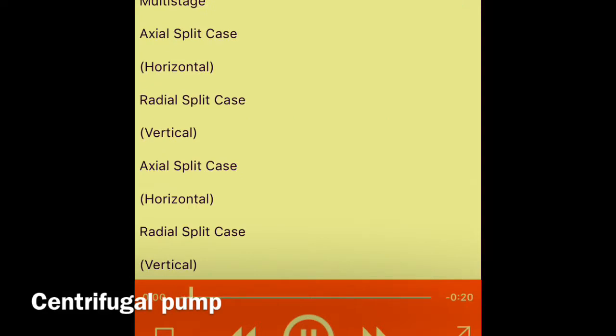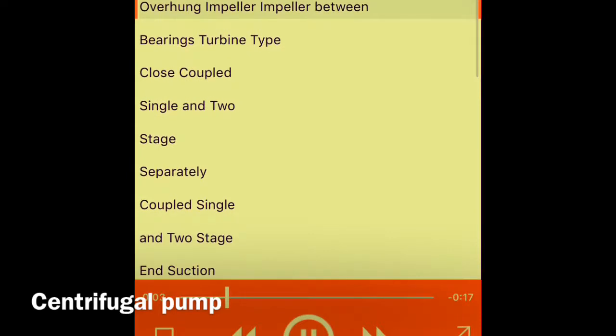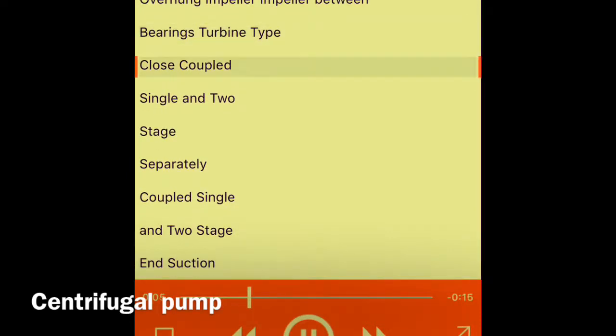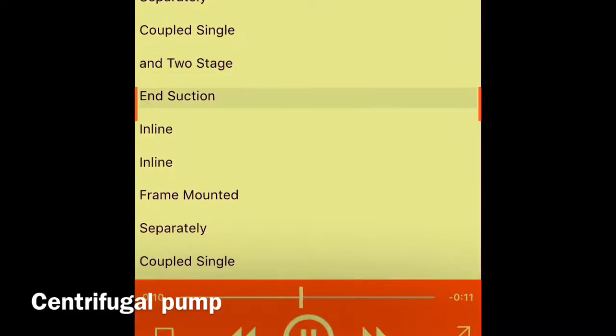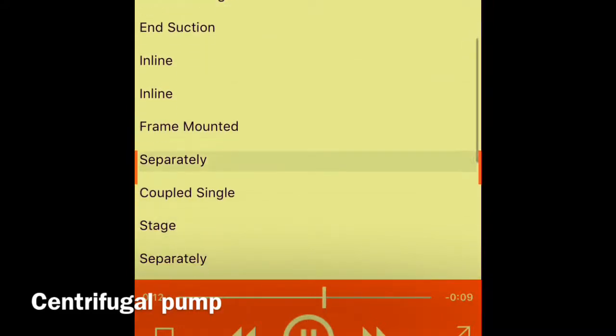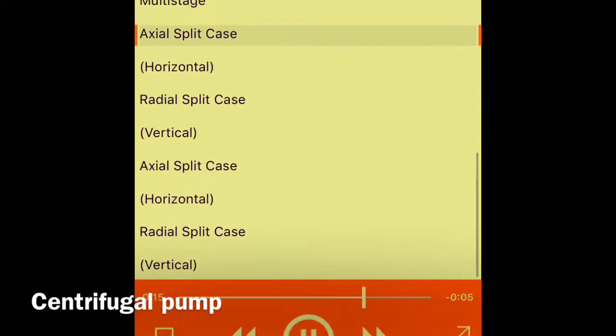Types of centrifugal pumps: Overhung impeller, impeller between bearings, turbine type, close-coupled single and two-stage, separately coupled single and two-stage, in-line frame mounted, multistage axial split case horizontal and vertical, radial split case horizontal and vertical.